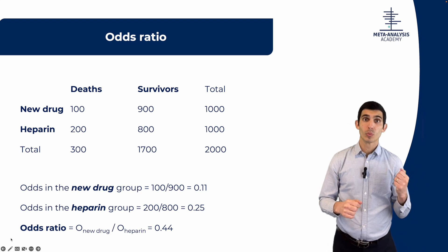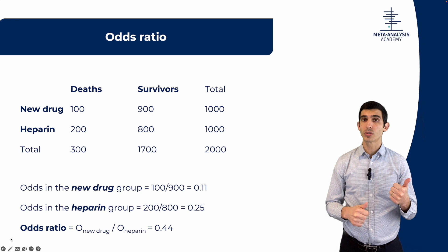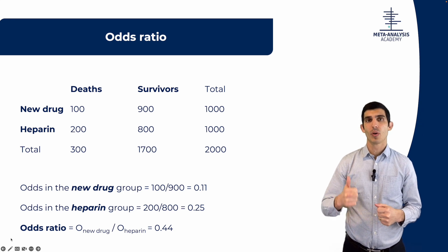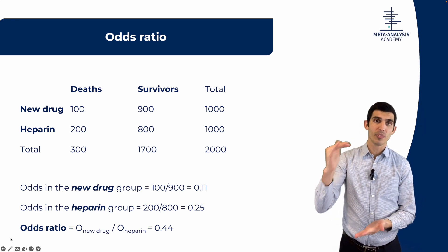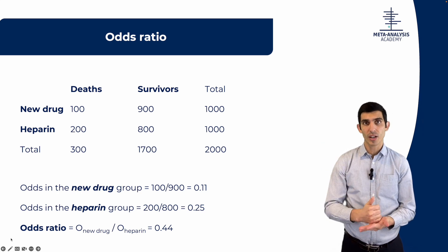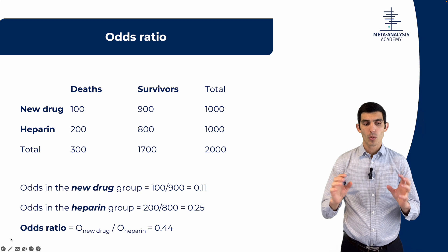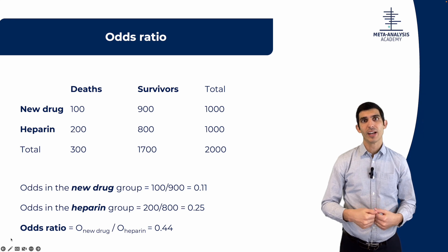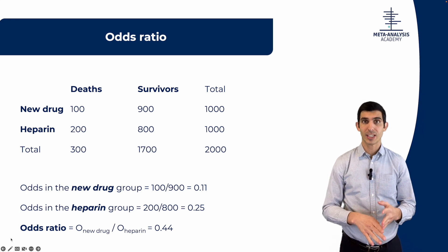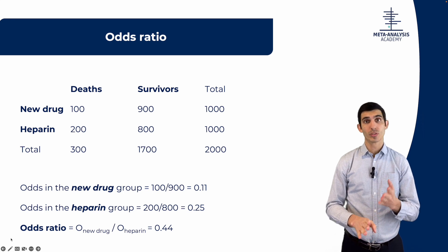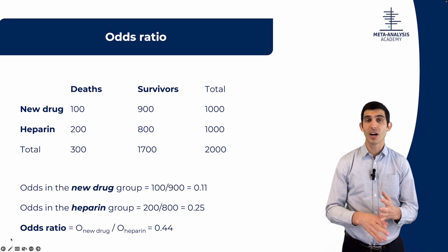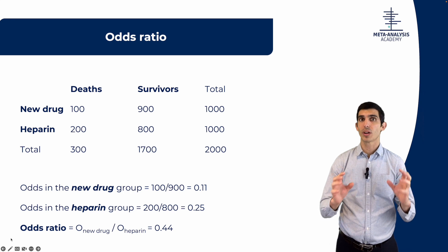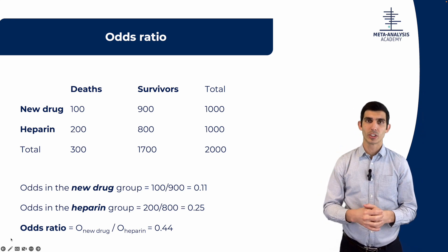That's the difference between risk ratio and odds ratio. Risk ratio, also called relative risk, is the ratio of risks between both groups. Odds ratio is the ratio of odds — the number of events divided by the number of non-events. It's important to realize how odds ratio tends to have a more impressive effect than risk ratio. In this case, risk ratio was 0.5 and odds ratio was 0.44. Every time you work with odds, it tends to appear more extreme.